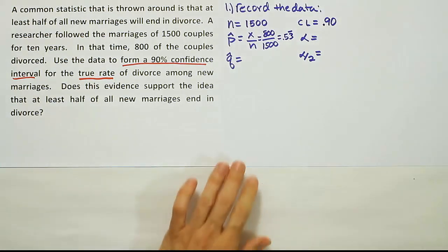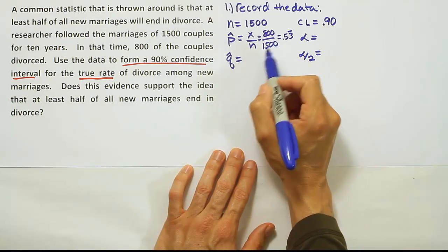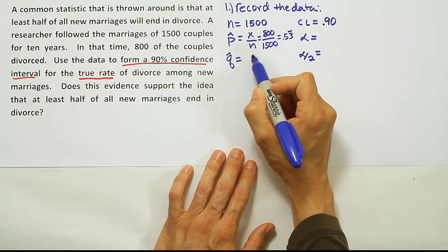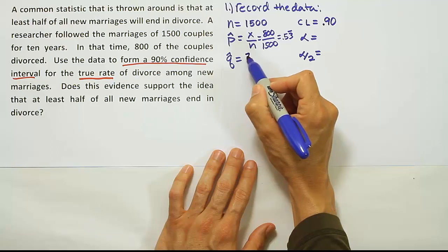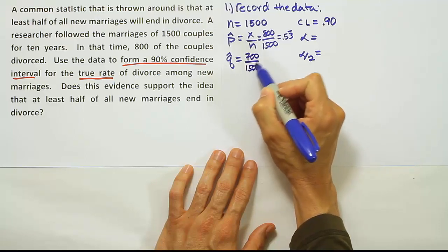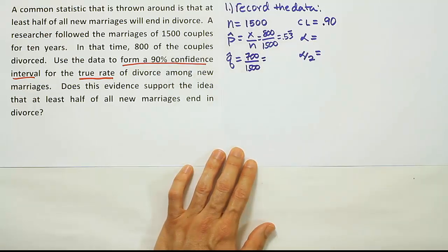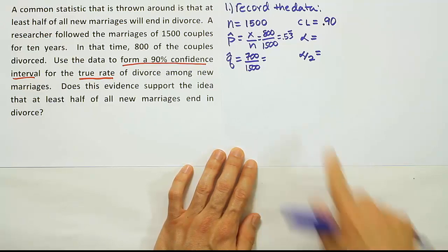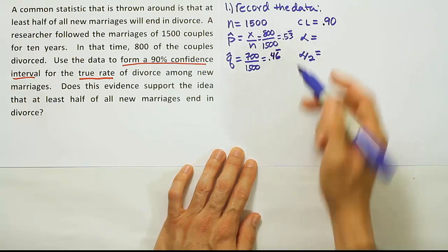From there, the next thing is to get our q-hat. Now, q-hat is just 1 minus p-hat. So one way you can do this is you literally do 1 minus that and get 1 minus 0.53 repeating. Or you could actually take that and say, well, 700 out of 1,500 have to have the other trait. Otherwise, they do not end in divorce. So the remaining 700 out of 1,500, because 700 and 800 add up to 1,500, so the remaining 700 out of 1,500 did not end in divorce. And if you wanted to divide that, you can do that. 700 divided by 1,500 and you get your decimal 0.46 repeating, which is what it should be given that that was 0.53 repeating.